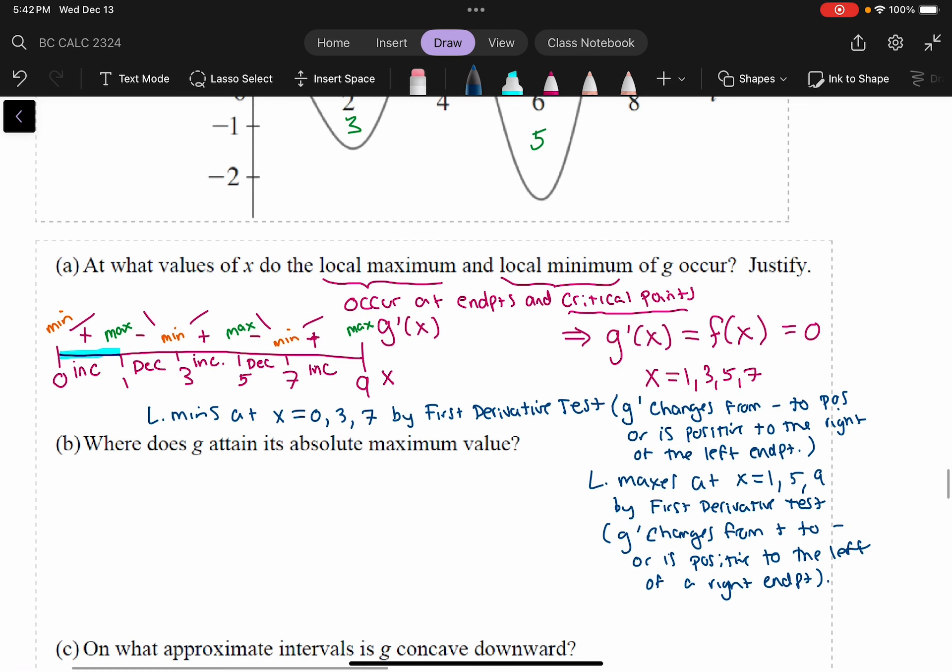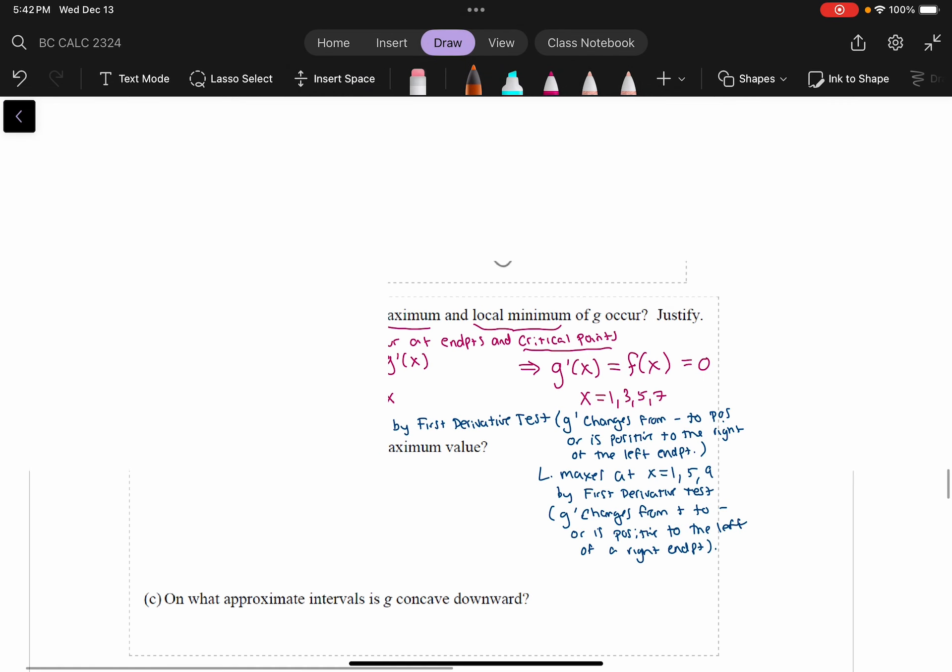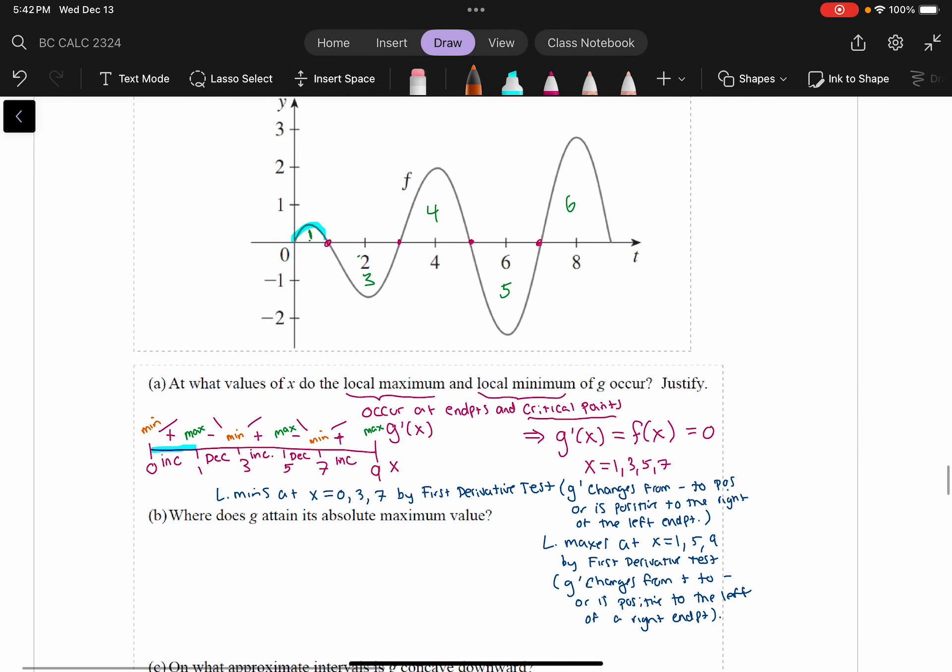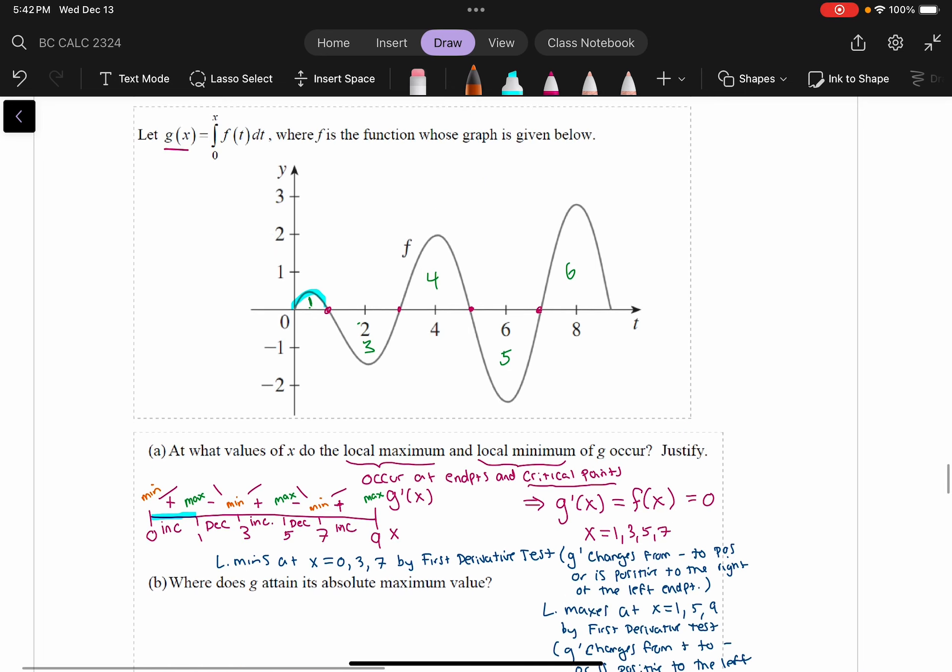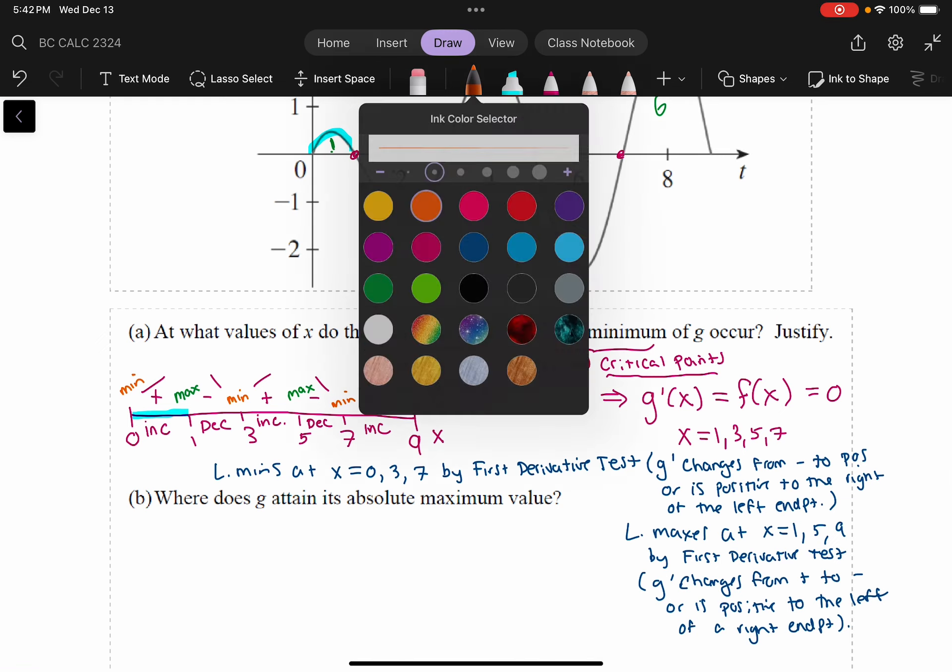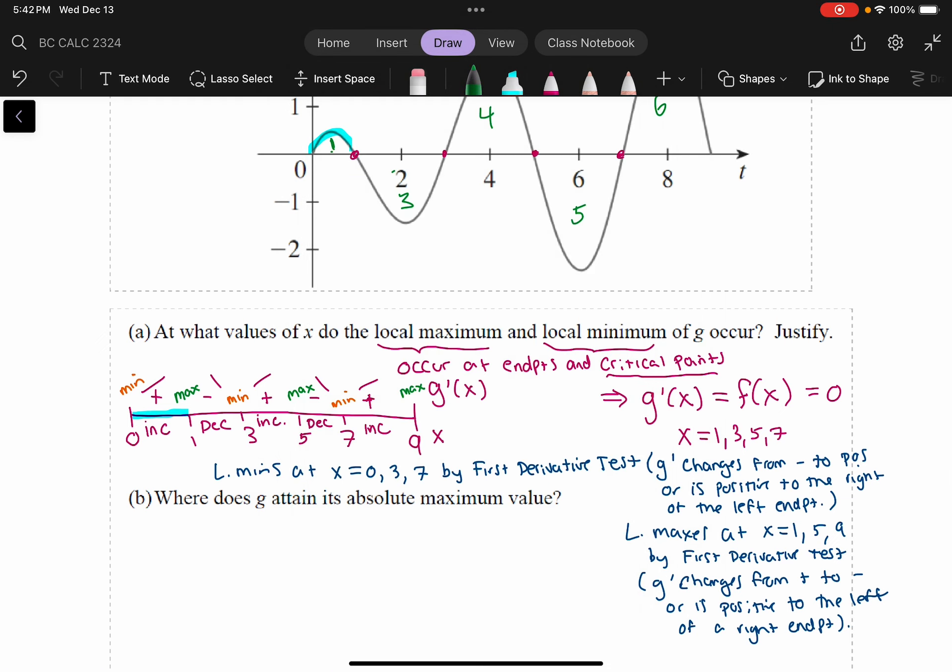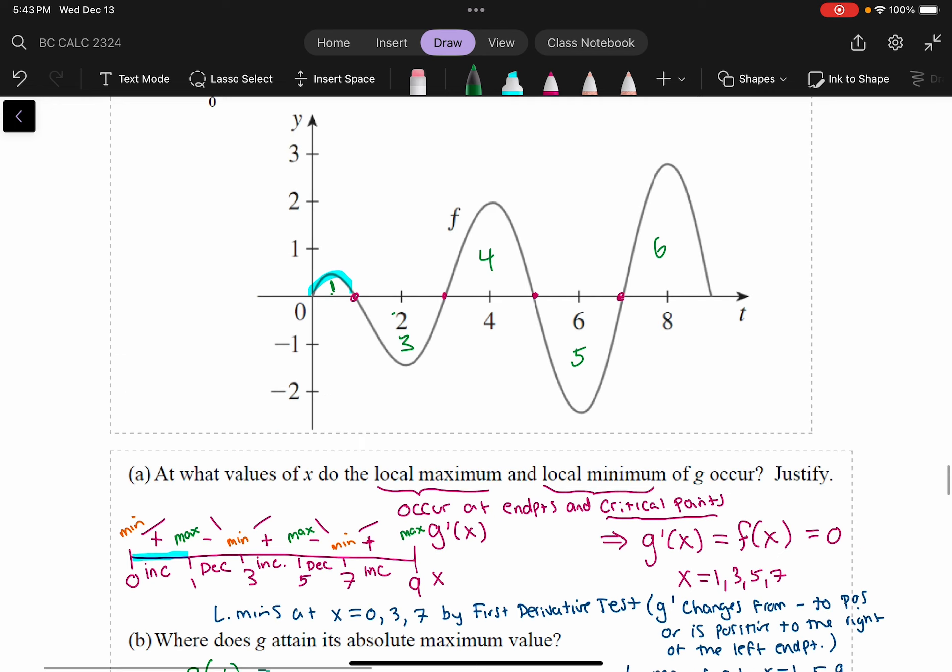So then it says, where does G attain its absolute maximum value? Well, this is why I had us put in those values. Let's evaluate the function G at those, the maxes. So, or the x values that correspond to the max. So, we want to evaluate G of 1. We want to evaluate G of 5. And we want to evaluate G of 9.